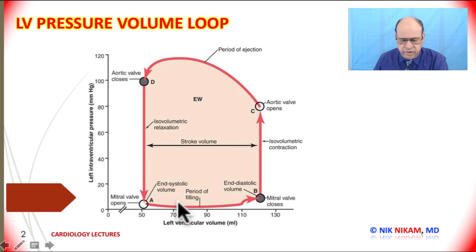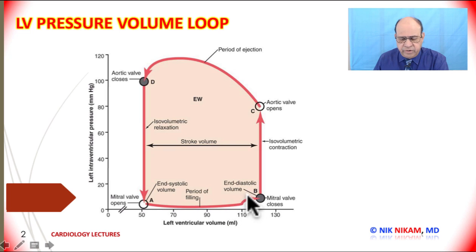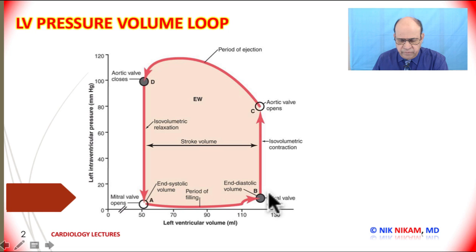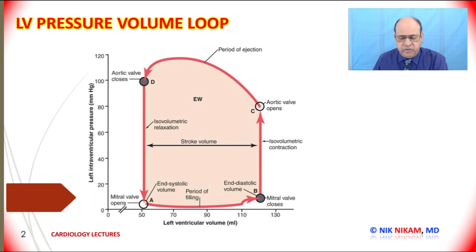Ventricular filling continues and the volume begins to increase in the left ventricular cavity until atrial contraction increases both the volume and the pressure in the left ventricular cavity. From point B to point C we have isovolumic contraction — the ventricle is beginning to squeeze but the volume is kept constant.